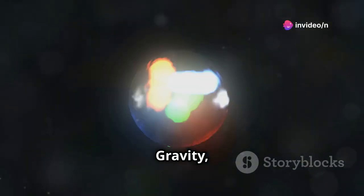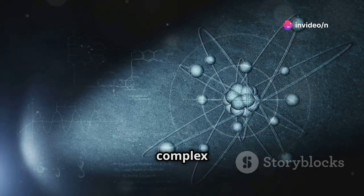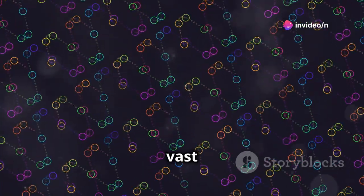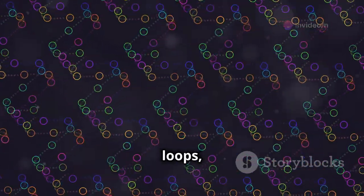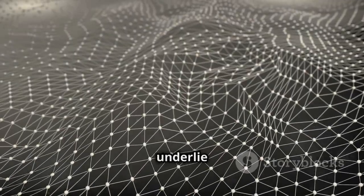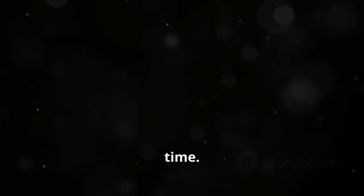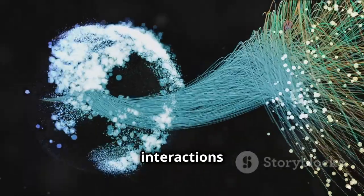In loop quantum gravity, these spatial atoms are connected in a complex web. Imagine a vast network of intersecting loops, hence the name. This network would underlie all of space and time. Gravity emerges from the interactions within this network.